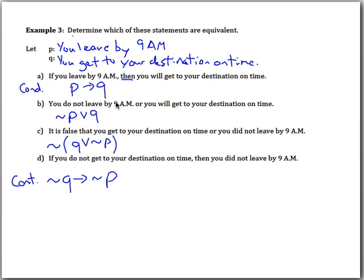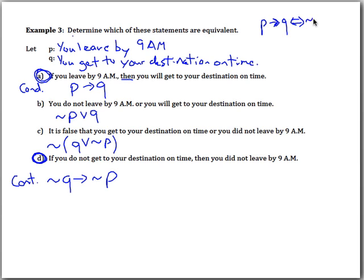Right away we know the conditional and the contrapositive are equivalent, so A and D are saying the same thing. For the remaining statements, we recall from the first part of 3.4 that we can rewrite a conditional statement as negation P or Q.